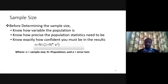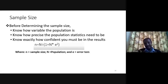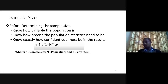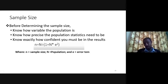The second factor is knowing how precise the population statistics need to be. If we want to predict the population parameter precisely from sample statistics, again the sample size should be larger. The third factor is knowing exactly how confident you must be in a result. If you want 100% confidence, the sample size must be very large, or you may need to go for census. Practically, you may say 95% confidence — the higher the confidence you want, the larger the sample size.